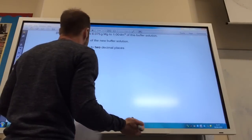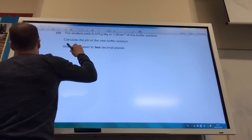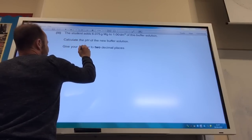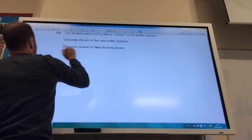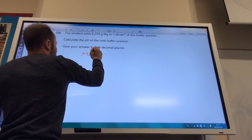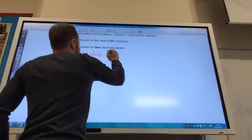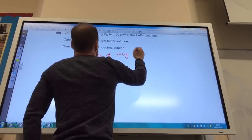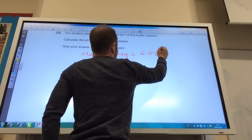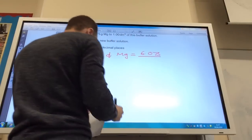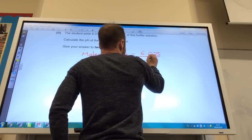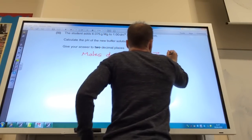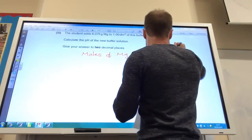First of all, I've got magnesium in grams, that's no good to me. So let's do moles of magnesium. So moles of magnesium is going to equal my mass divided by my molar mass of magnesium 24.3 which comes to 0.25.